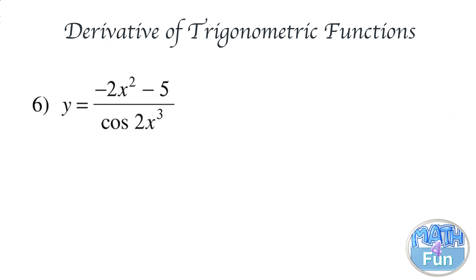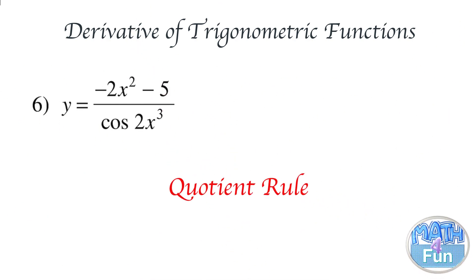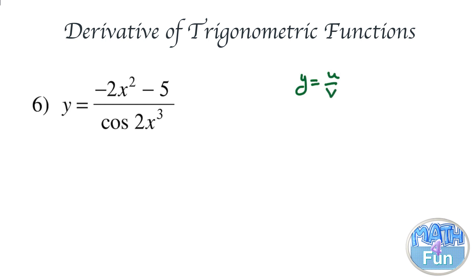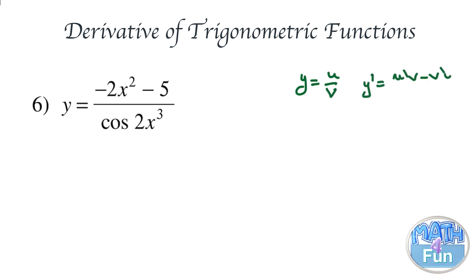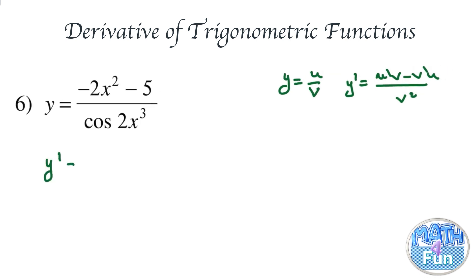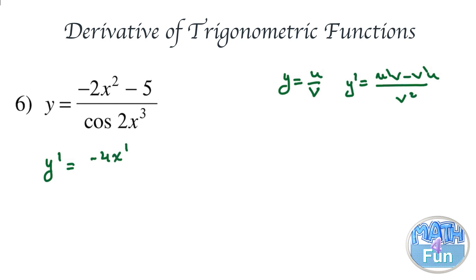Here we need to apply the quotient rule, since we have the quotient of minus 2x squared minus 5 divided by cosine of 2x cubed. As a reminder, if y equals u over v, then y prime equals u prime v minus v prime u over v squared.